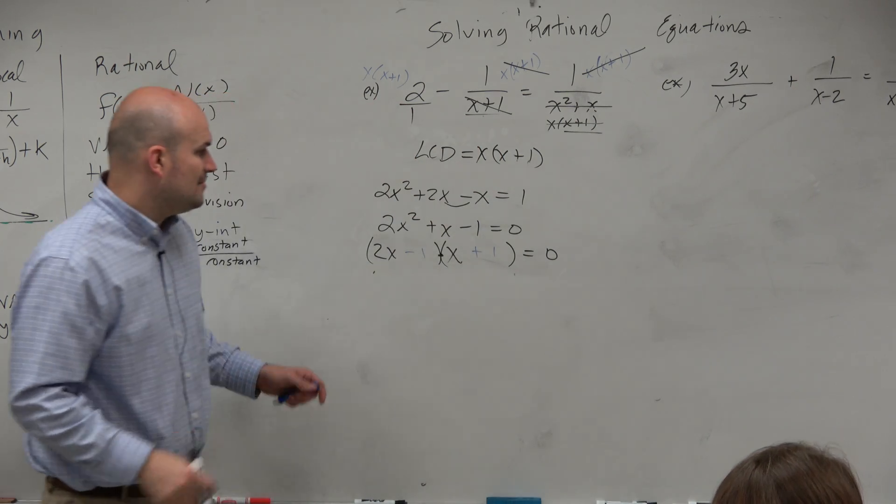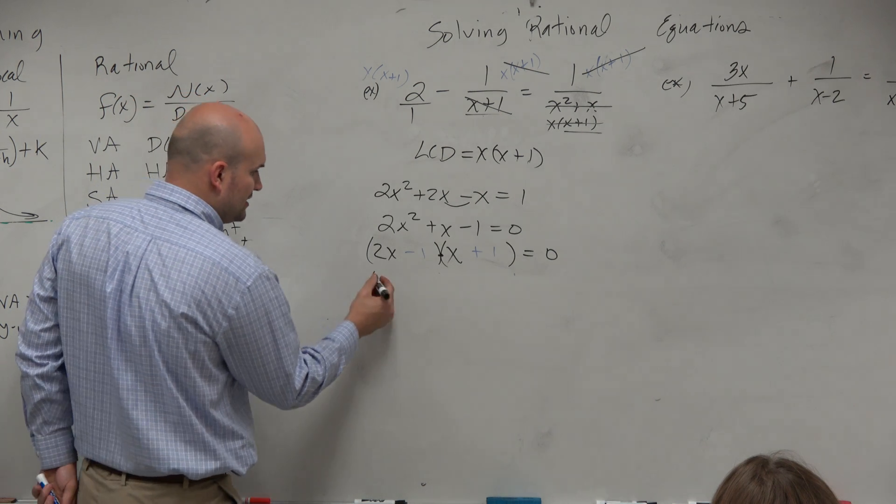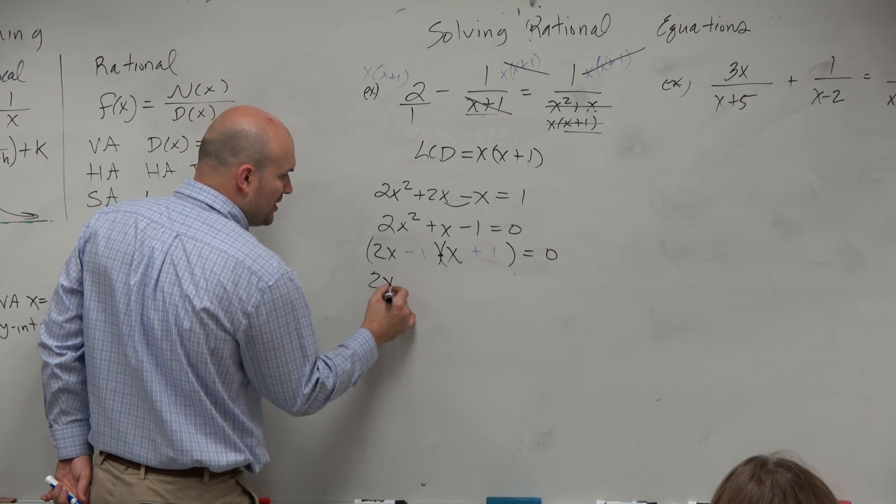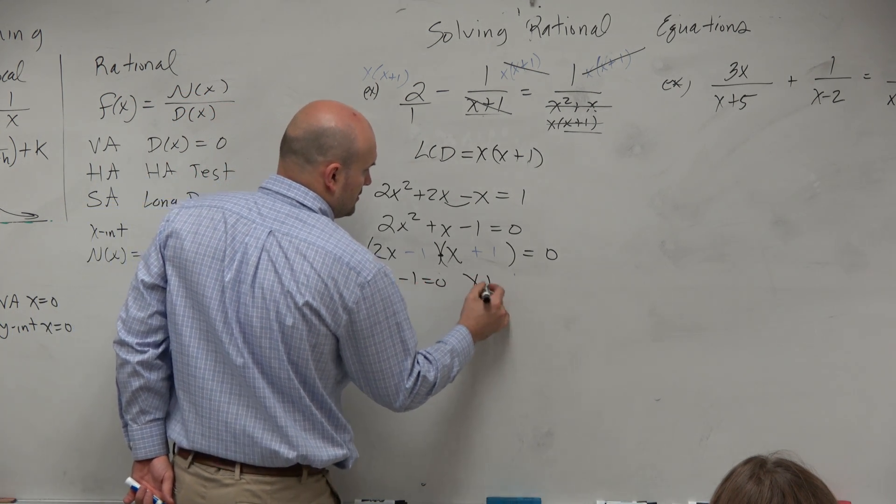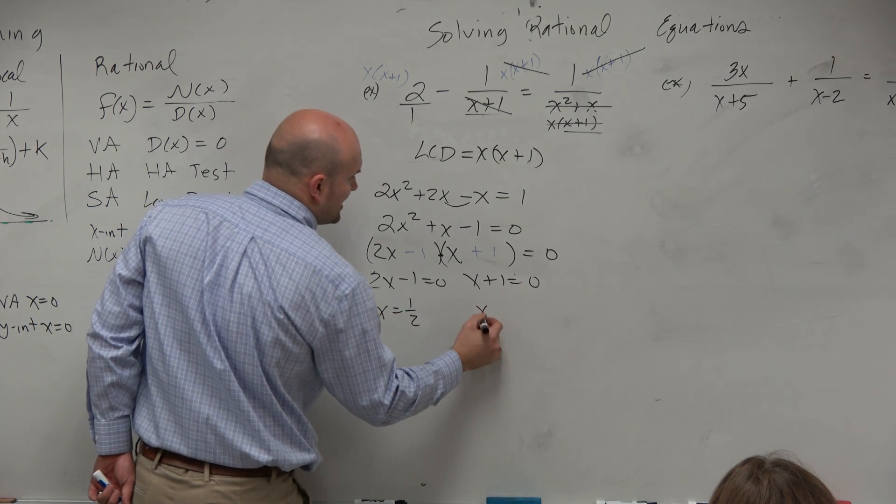So once I now have my answer, now I have a product equal to 0. I can solve that all day long because that's all we've been doing, right? Zero product property. x equals 1 half. x equals negative 1.